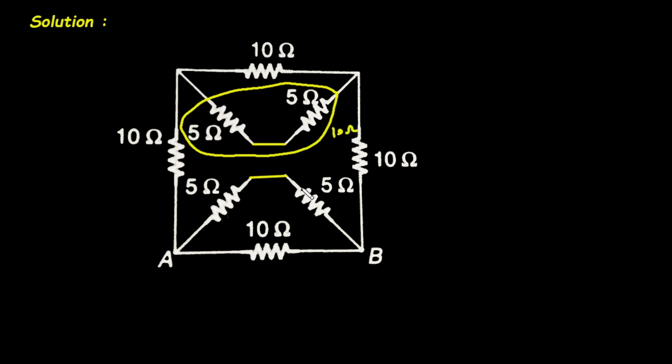Now here also this will be 10 ohm. And this 10 ohm and this 10 ohm they are connected in parallel. So this will be 5 ohm simply. So it will be like this. And it will be 5 ohm.